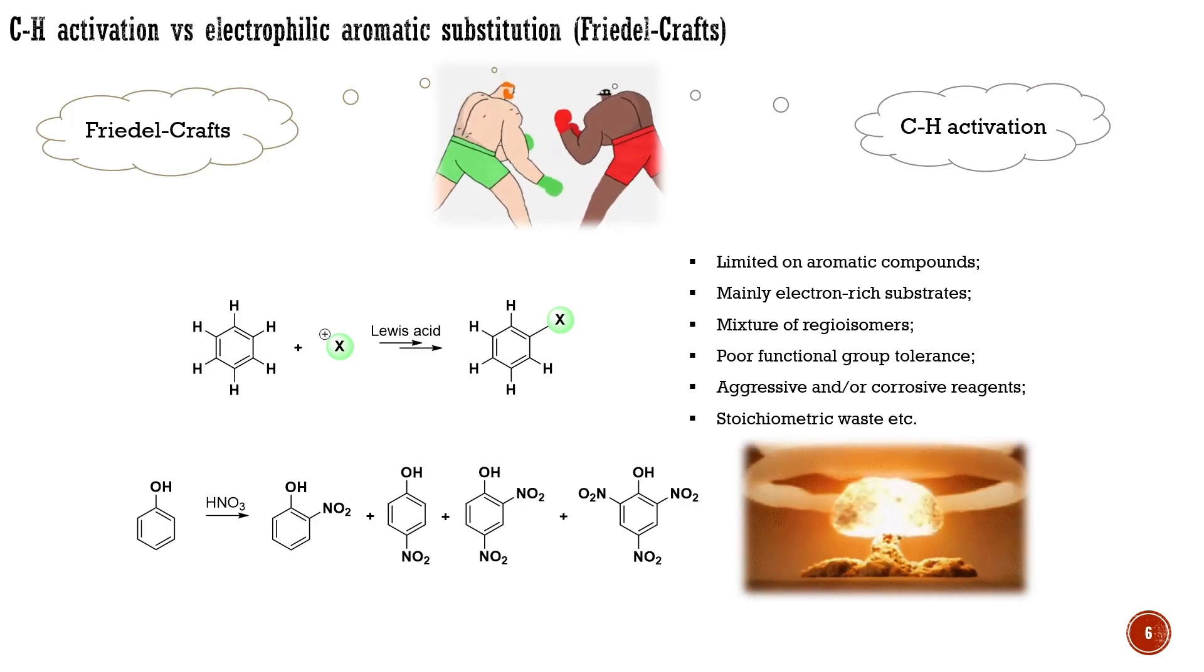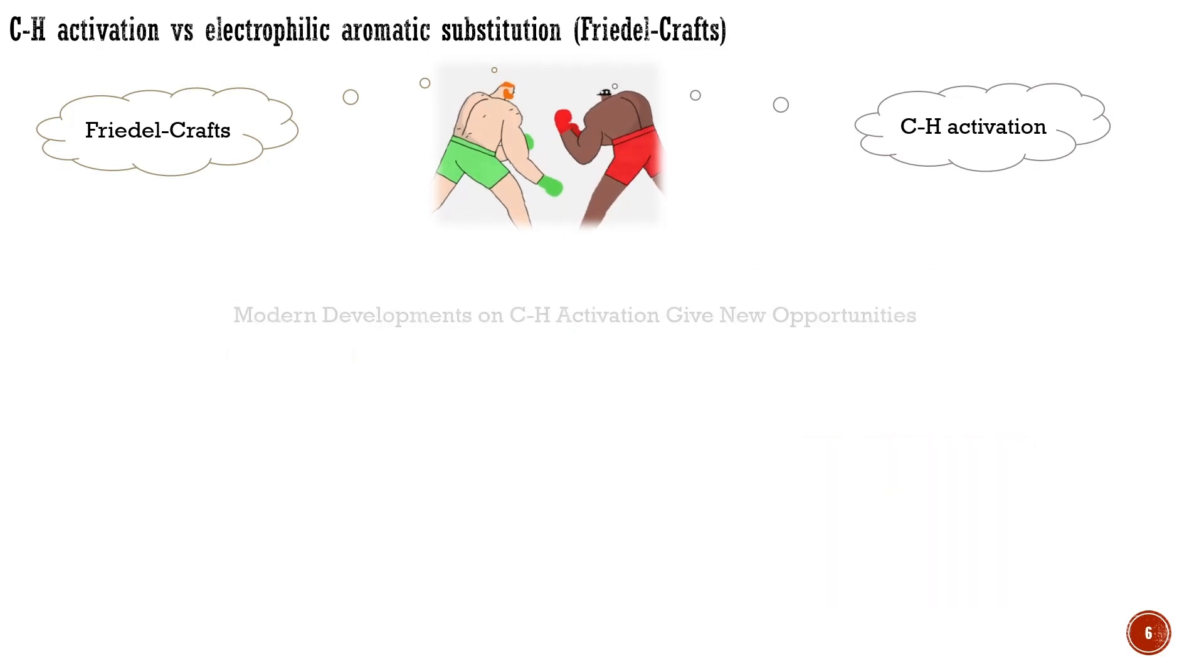Modern developments in transition metal-catalyzed C-H transformations address most of the problems inherent to electrophilic aromatic substitution. As I will demonstrate later, using transition metal catalysis allows for the selective functionalization of all classes of organic compounds, including electron-deficient arenes and aliphatic compounds.